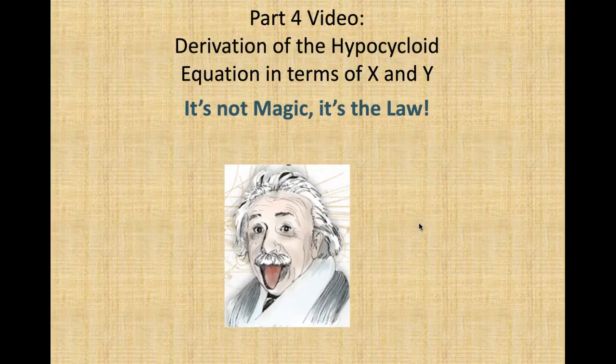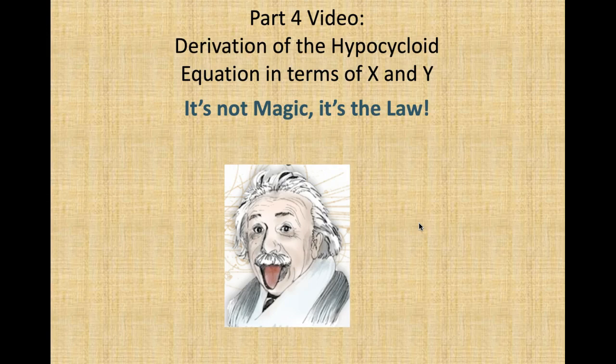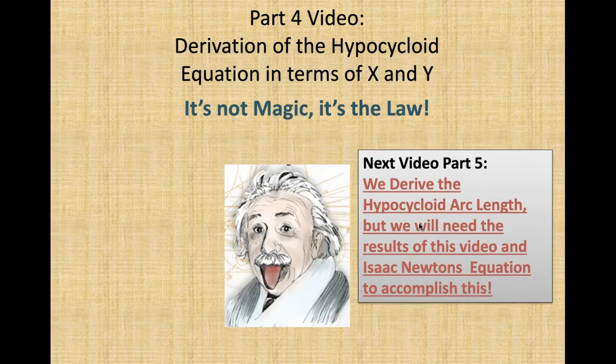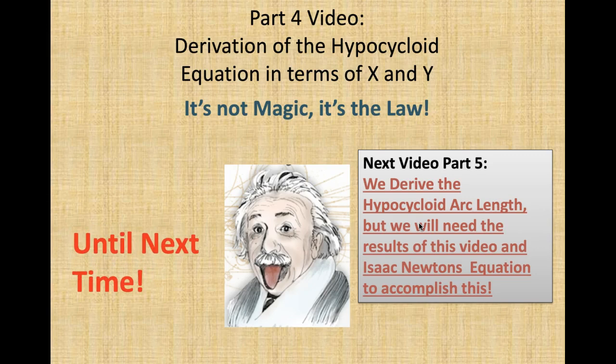Well, that's it for this part four video, derivation of the hypocycloid equation in terms of X and Y. It's not magic, it's the law. In our next video, part five, we derive the hypocycloid arc length. But we will need the results of this video and Isaac Newton's equation to accomplish this. Until next time, I hope you learned something.